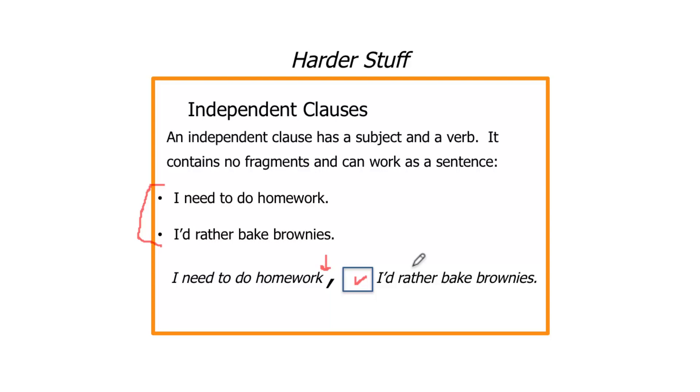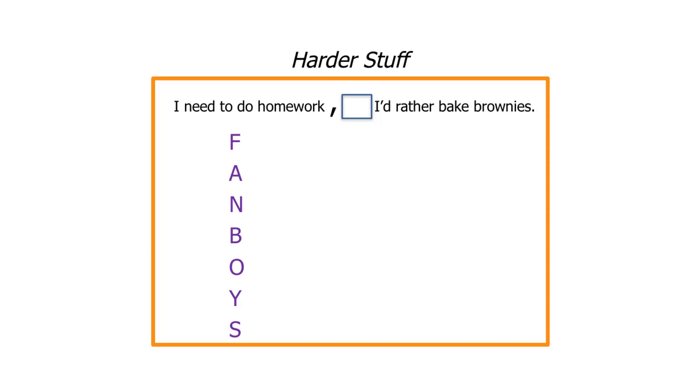A lot of you know these as FANBOYS. That's the little mnemonic to help you remember. They are words that are going to get plugged into the box there. There are only seven of them. There are more than seven words that you could put in here that would work. But there are only seven words that would require you to then use a comma. And those seven words are for, and, nor, but, or, yet, and so. What's very important is that these are the only words that give us a comma.